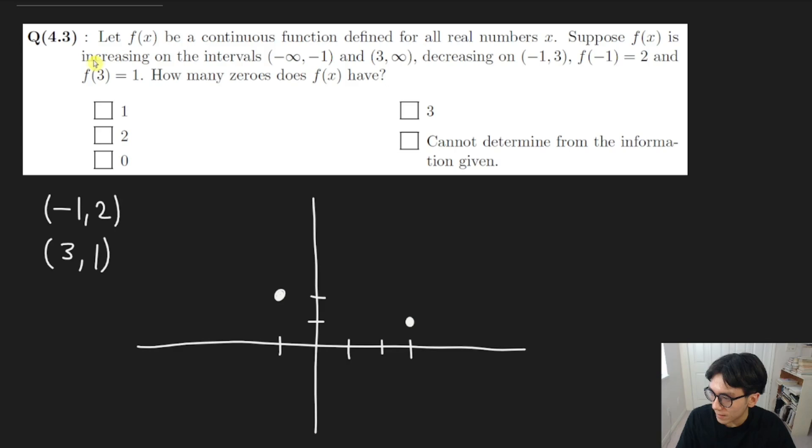So for example, f is increasing on the intervals from negative infinity to negative 1. That means, here's negative 1, right? So that means that to the left of negative 1, the function has to go down. Now here's the thing, it doesn't need to have a zero here. A function can decrease and go down like this and just keep going down indefinitely.